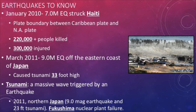In 2011, there was a 9.0 magnitude earthquake that hit Japan. This triggered a 33-foot tsunami, or massive wave generated by earthquakes. This earthquake and resulting tsunami created a nuclear power plant failure at Fukushima and resulted in a nuclear disaster on par with the Chernobyl explosion in 1986.